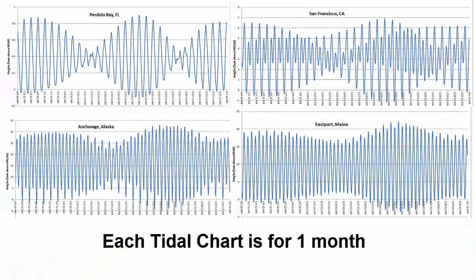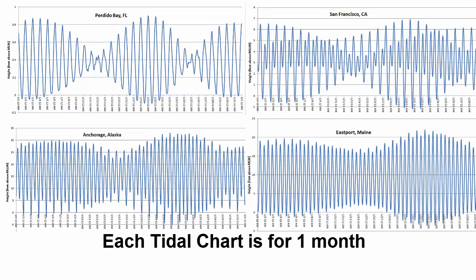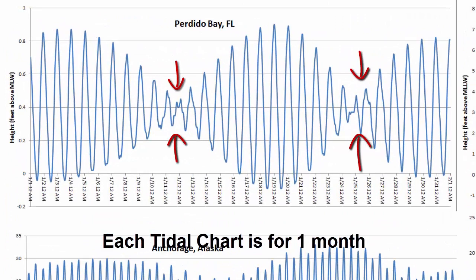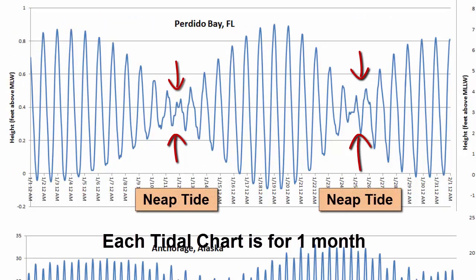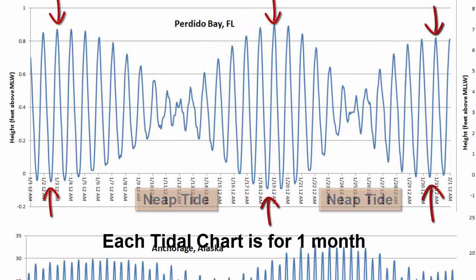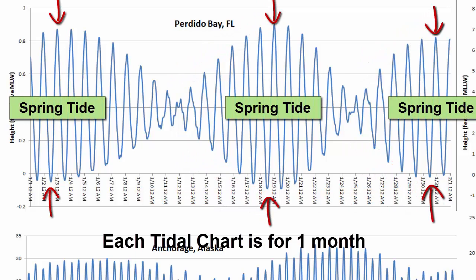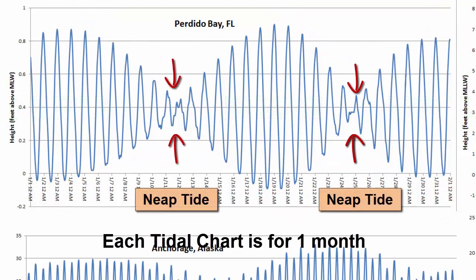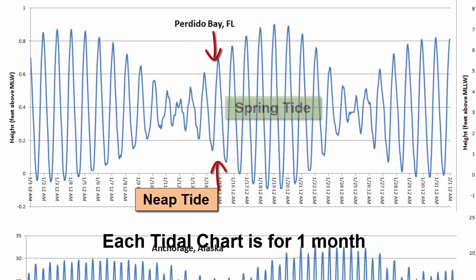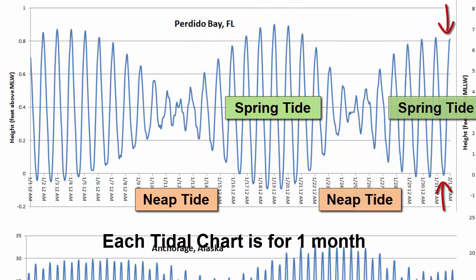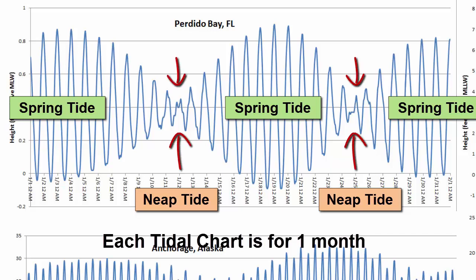Tidal range also fluctuates on a two-week period. Looking at the tidal chart from Florida, we can see that twice during the month the tidal range becomes much smaller — we call those neap tides. After each neap tide passes, tidal range grows again until it reaches a maximum tidal range, which we call spring tides. Spring tides and neap tides each happen every two weeks. During neap tides we get both the lowest highs and the highest lows; the opposite is true for spring tides, which have the highest highs and the lowest lows.